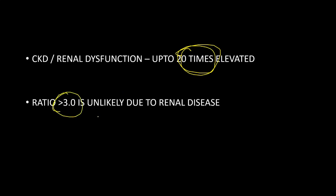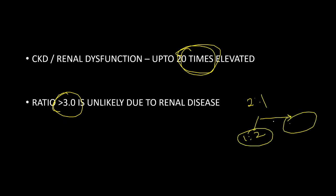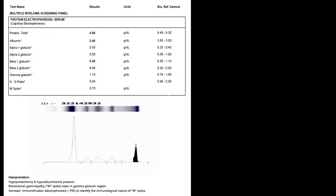A ratio more than 3 is unlikely to be due to renal disease alone, suggesting some underlying monoclonality. Even if the normal ratio is 2:1, if it rises to 1:2 or more than 3, there is a possibility of underlying monoclonality. The free light chain assay can also be used in follow-up to detect how much reduction has occurred, and is commonly used for follow-up after treatment when monoclonality is detected on serum protein electrophoresis.